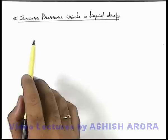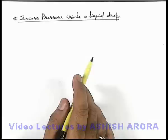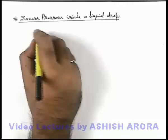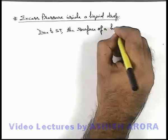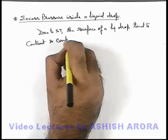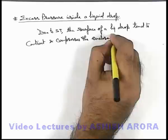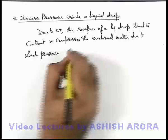Let's discuss the concept of excess pressure inside a liquid drop. We know well that due to surface tension, the surface of a liquid has a tendency to contract because it is acting like a stretched membrane. So we can simply write that due to surface tension, the surface of a liquid drop tends to contract and compresses the enclosed material, due to which the pressure inside increases.